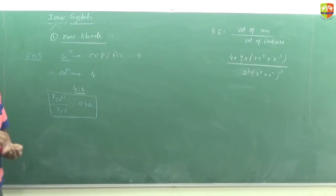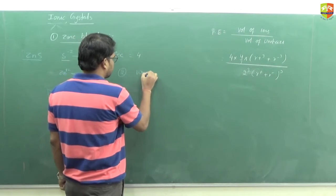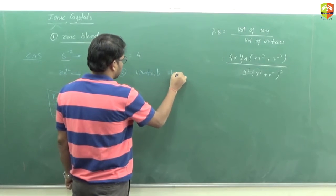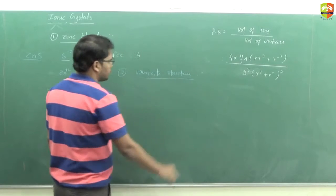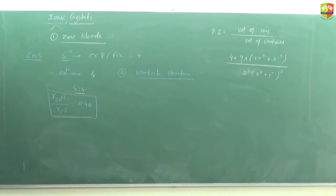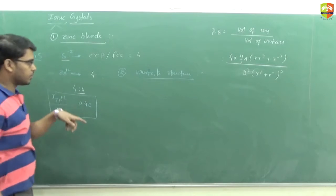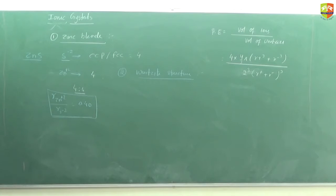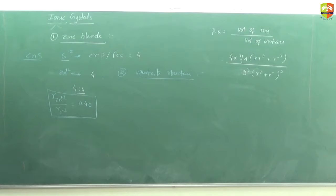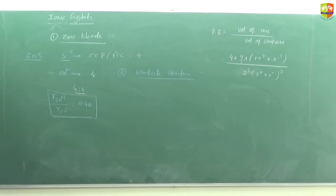Next, write down the Wurtzite structure - the second type of structure of ZnS. It has HCP arrangement, hexagonal close packing. S²⁻ ions are arranged in HCP manner, and Zn²⁺ ions occupy half of the tetrahedral voids - specifically the alternate tetrahedral voids.